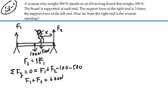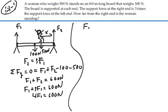Of course, F2 is equal to 3F1. So we have F1 plus 3F1 equals 600 newtons, or 4 times F1 is equal to 600 newtons. So F1 is equal to 150 newtons, 600 divided by 4.